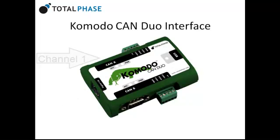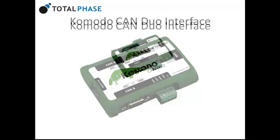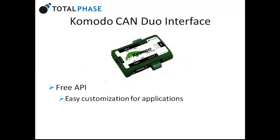Finally, the Komodo has two independently configurable CAN channels, which allow users to interface with both CAN channels at the same time. The Komodo CAN-DUO interface comes equipped with our free API, so you can create your own custom applications.